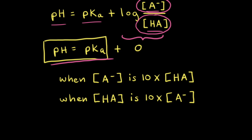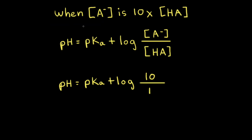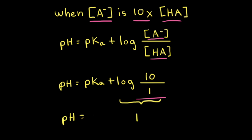Therefore, to find the effective pH range, we're going to use the Henderson-Hasselbalch equation to calculate the pH when the concentration of the conjugate base is 10 times the concentration of the weak acid. Doing these two calculations gives us the upper and lower limits of the effective pH range. When the concentration of the conjugate base is 10 times the concentration of the weak acid, the ratio is equal to 10 over 1 and the log of 10 is equal to 1. Therefore, the pH of the buffer solution is equal to the pKa value of the weak acid plus 1. This value for the pH represents the upper limit of the effective pH range.